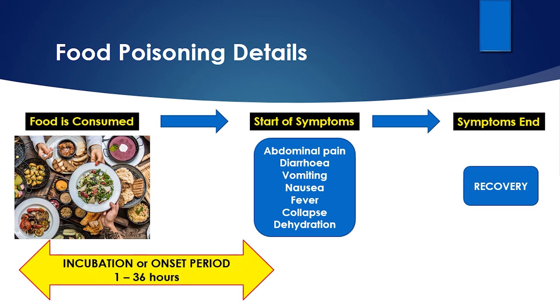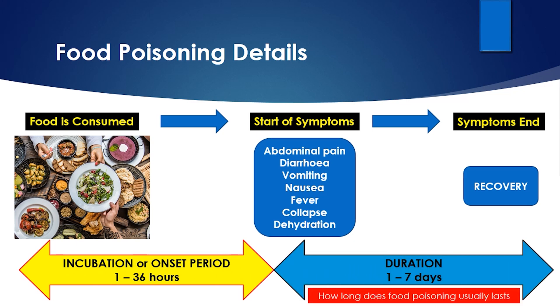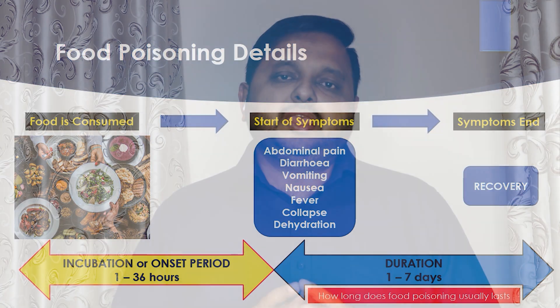The incubation period could be between 1 hour to 36 hours generally. Once the symptoms start, after a few days the person will recover. This recovery period is called the duration of food poisoning and it could be between 1 day to 7 days in general. In some cases, food poisoning can be very severe and the symptoms can last for more days than that.